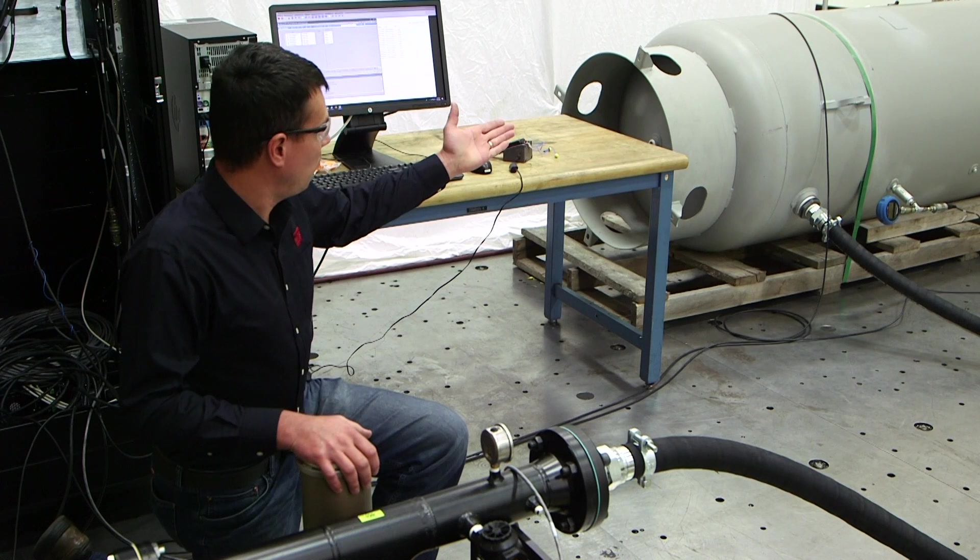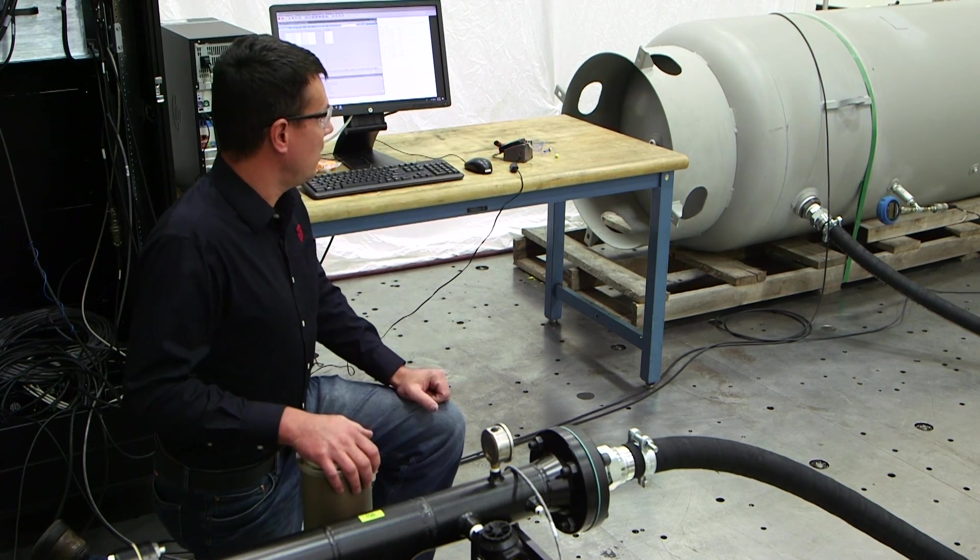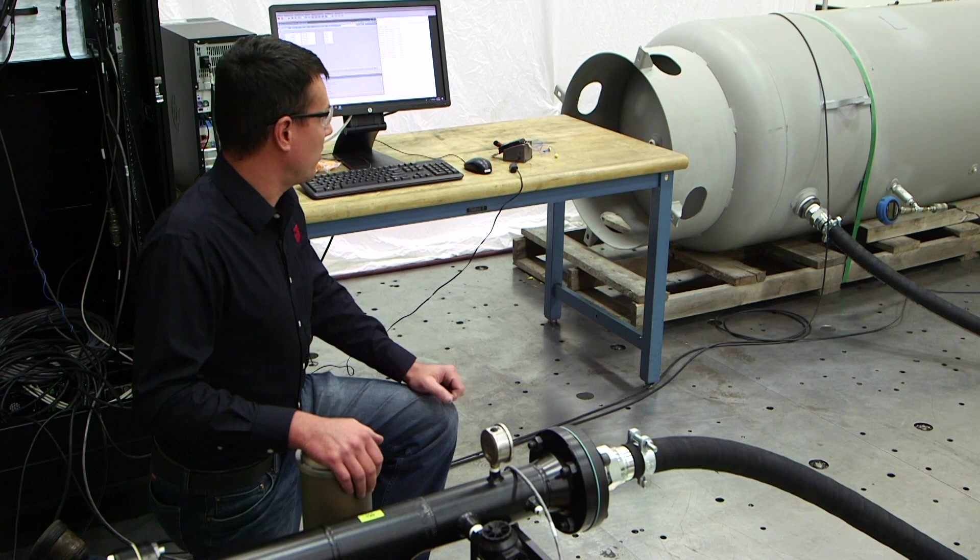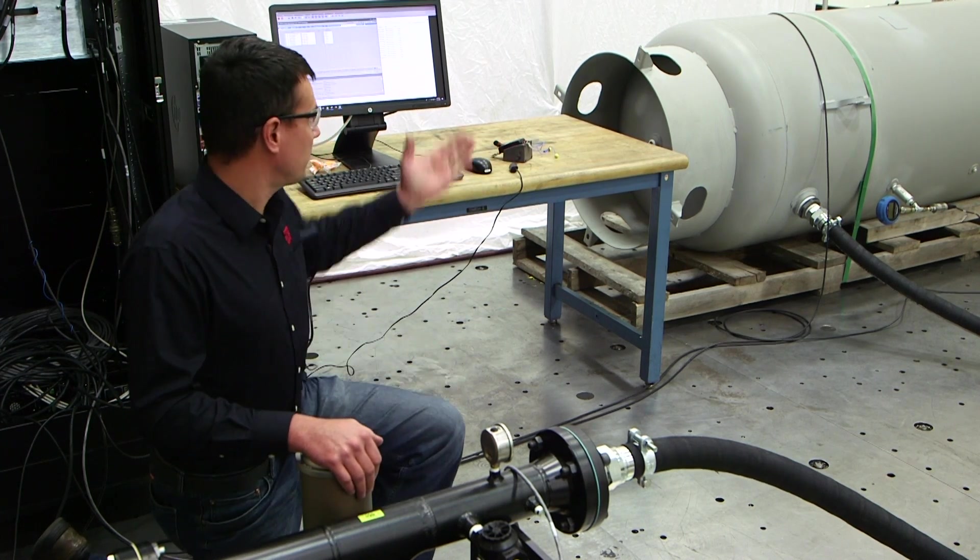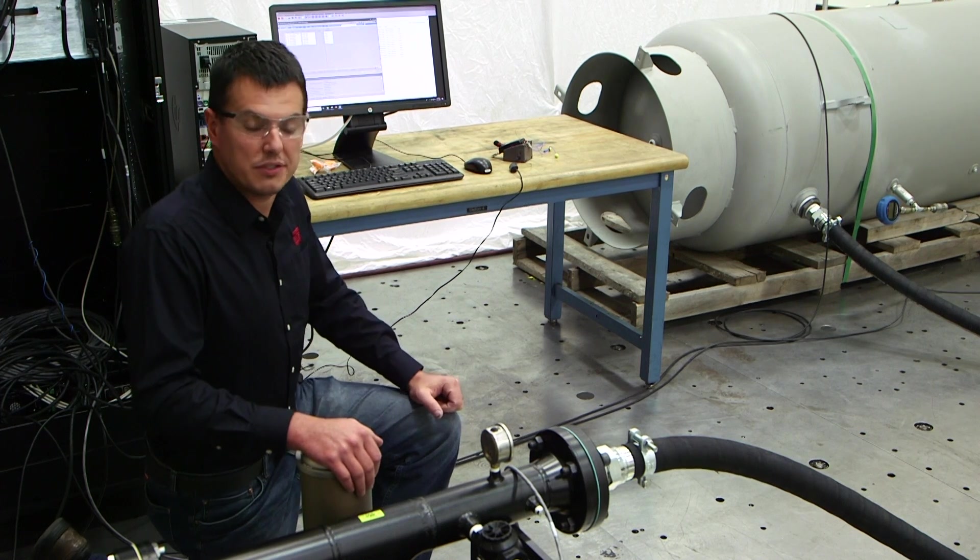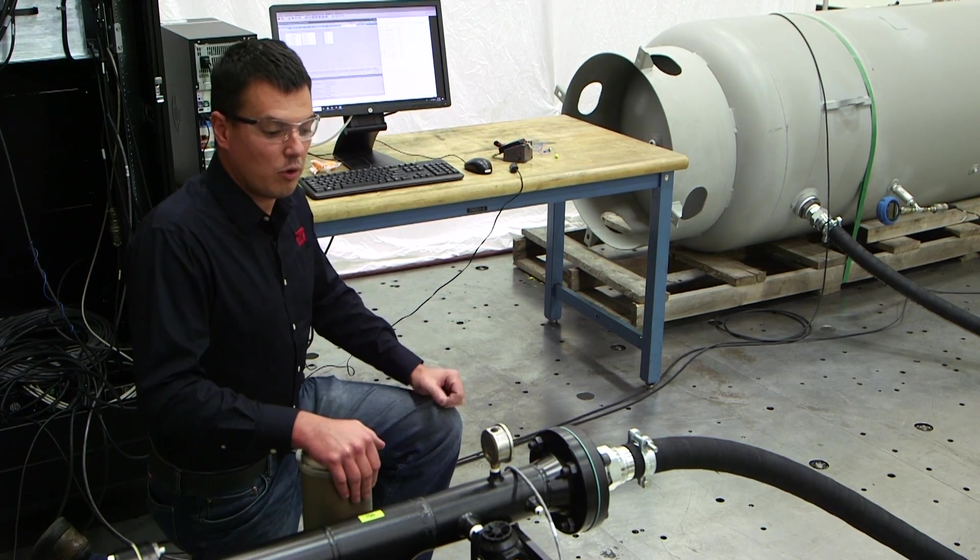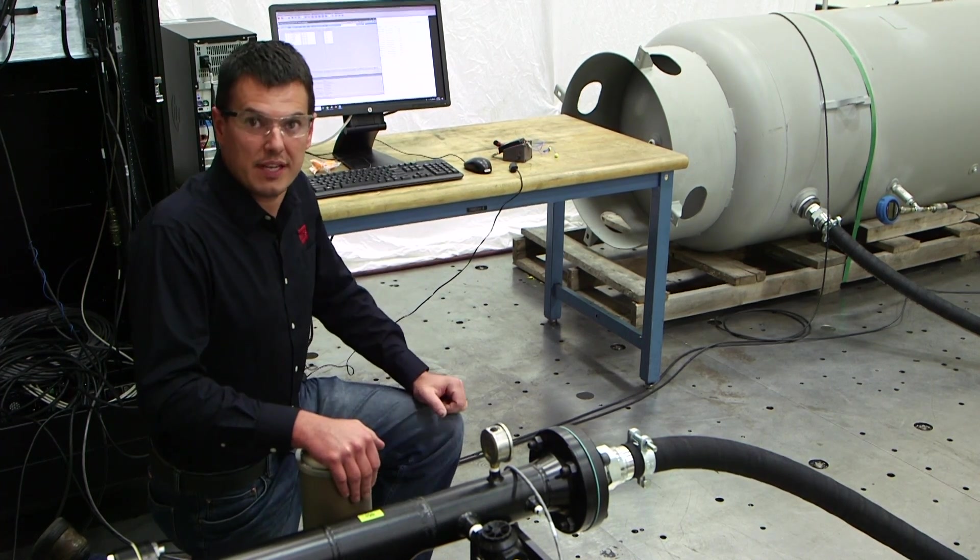So we got our tank set up over here. It's a 1.5 cubic meter tank, or 400 gallon. We got a pressure transducer installed, and we also have an auxiliary dump valve, which we will see in operation once we bring Mike to run the test for us.